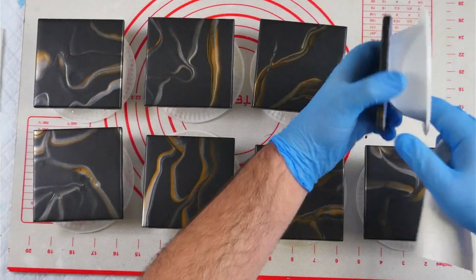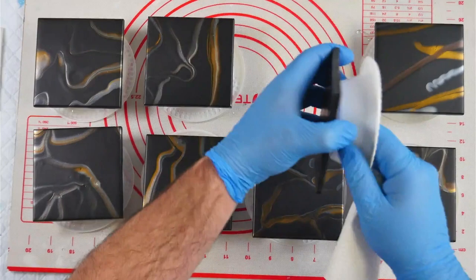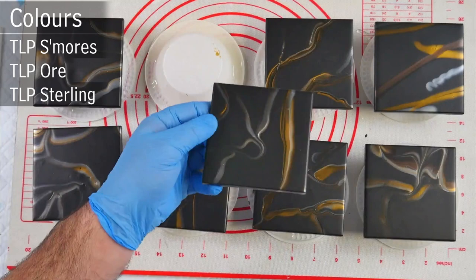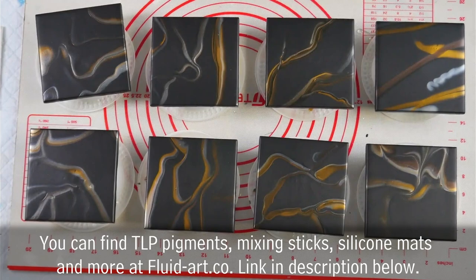So the idea behind these was to create a marble effect with the tile and I thought I could do that by drizzling some TLPs through the black and I believe the TLPs that I used were s'mores, ore and sterling and they didn't quite go to plan so instead of having nice striations I've got these really weird squiggly whatever they are and like I said not happy with them so I'm going to try embellishing them.